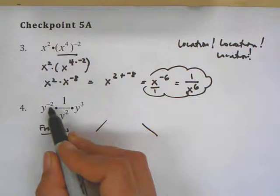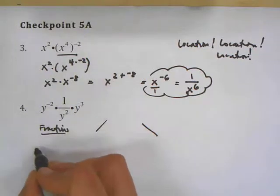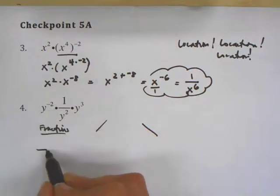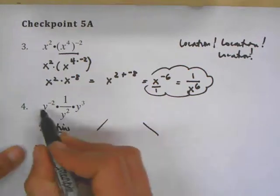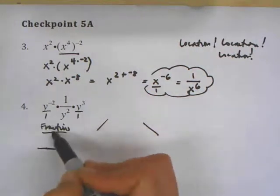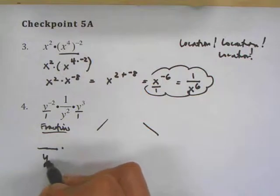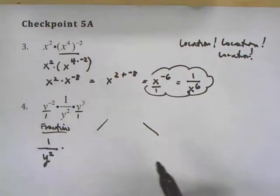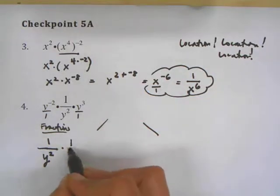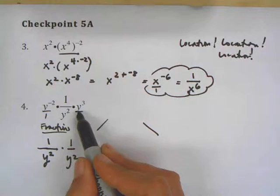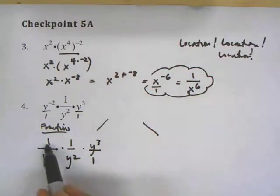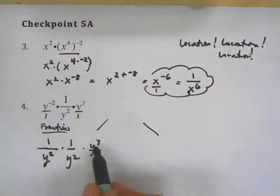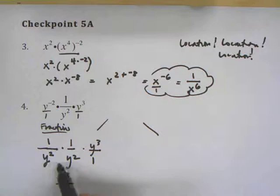So y to the negative second — once again, I see a negative exponent: location, location, location. I take that y to the negative second, which is in the numerator, and put it in the denominator. When I change location, it becomes positive, so this is 1 over y squared. The other part is also 1 over y squared. And y to the third is the same as y to the third over 1. So multiplying this out: 1 times 1 times y to the third is y to the third, over y squared times y squared.